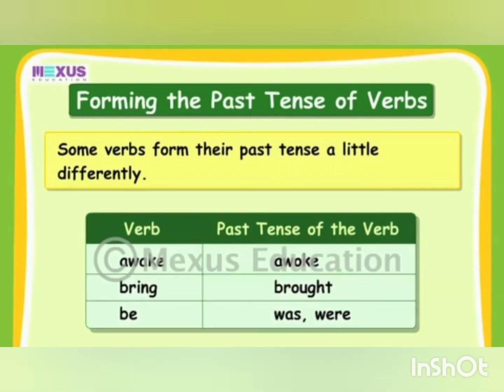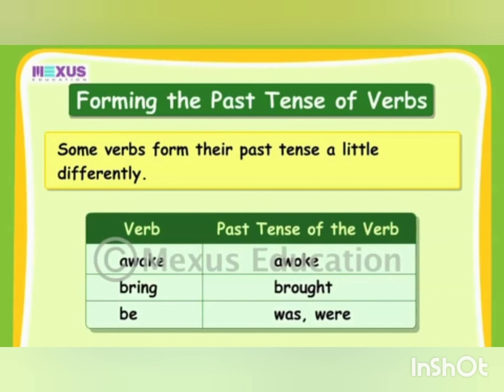Children, some verbs form their past tense a little differently. For example, 'awake' becomes 'awoke', 'bring' becomes 'brought', and 'be' becomes 'was' or 'were'. Children, if the verb in the present tense ends in 's' or 'es', we drop the 's' or 'es' and add 'd' or 'ed' at the end.